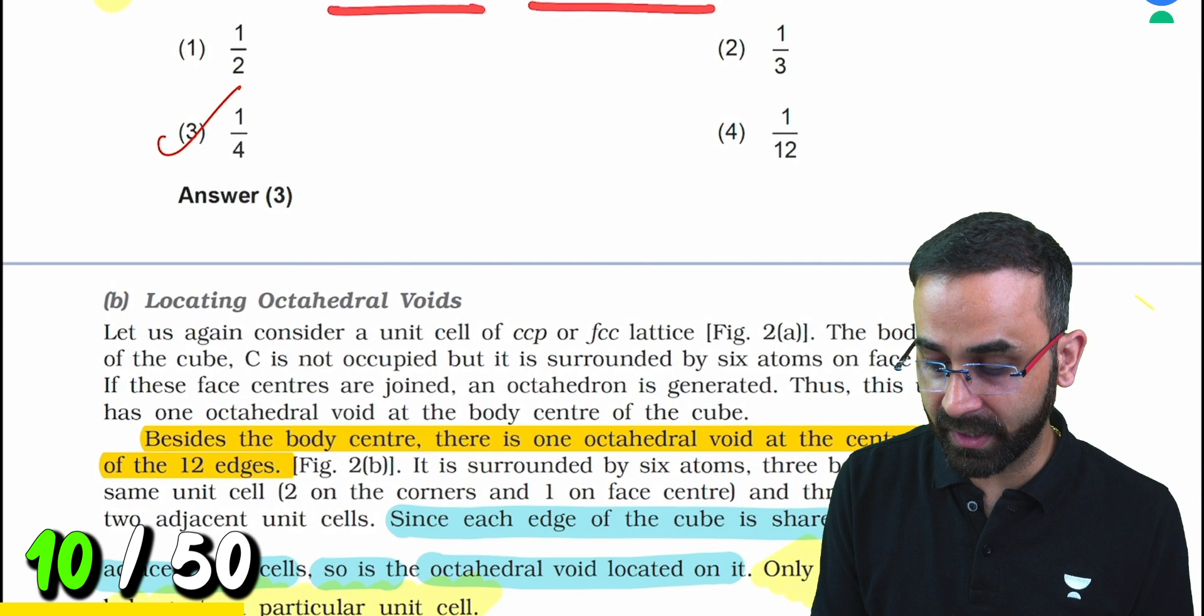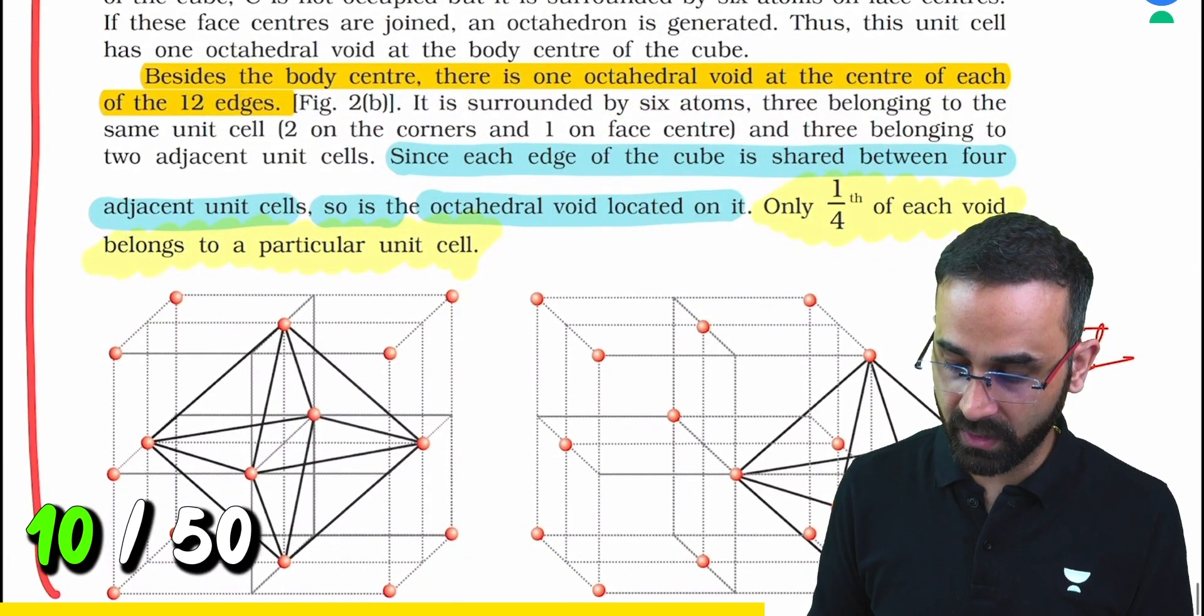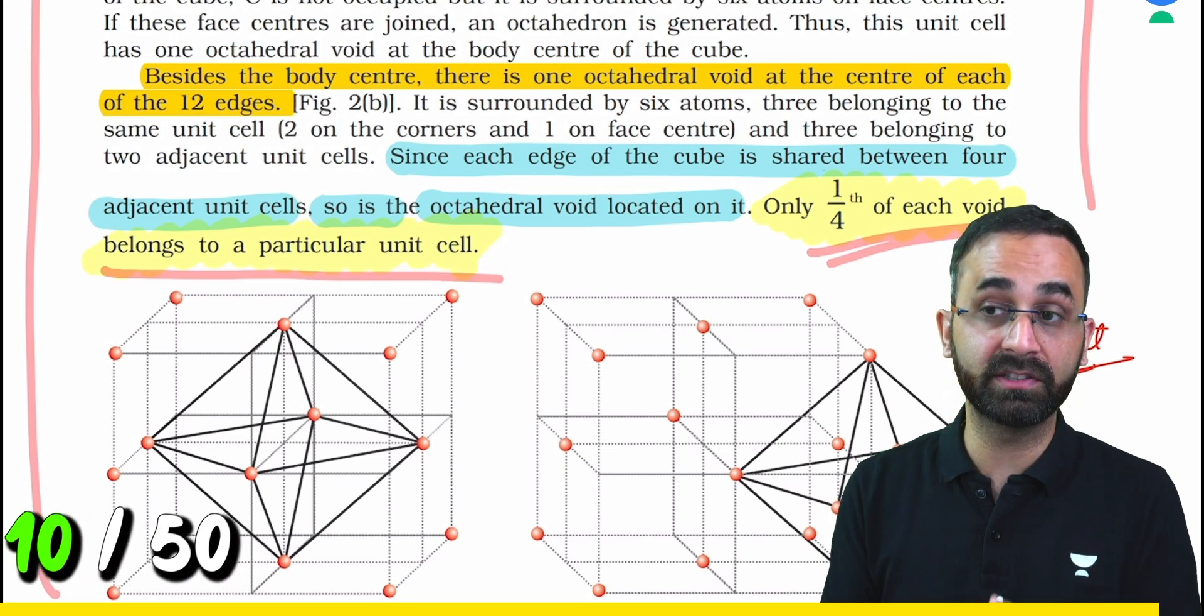What fraction of one-eighth of octahedral voids: directly from information in the solid state chapter. Everything is given. One-fourth of each void belongs to a particular unit cell.